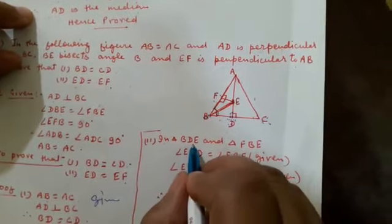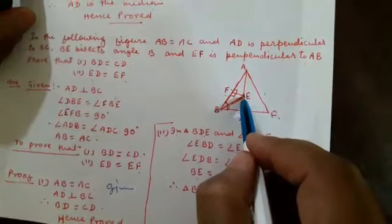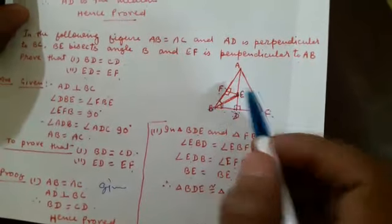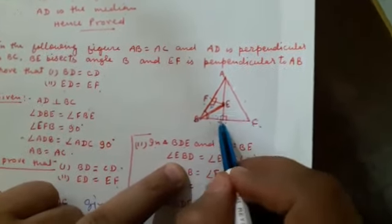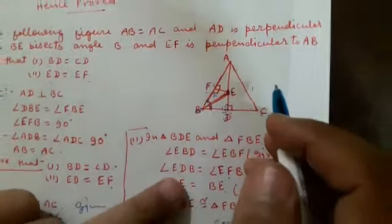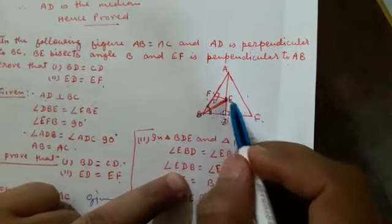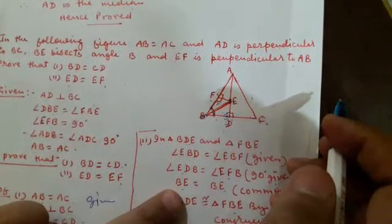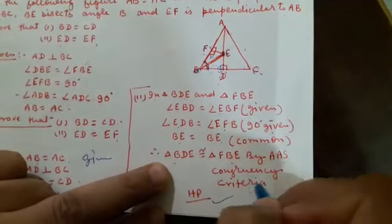Part 2: In triangle BDE and triangle FBE — angle EBD is equal to angle EBF as both angles are equal and given; angle EDB is equal to 90 degrees and angle EFB is also 90 degrees as given; and BE is equal to BE as it is common to both triangles. Therefore triangle BDE is congruent to triangle FBE by AAS congruency criteria. Hence ED is equal to EF by CPCT. Part 2 proved.